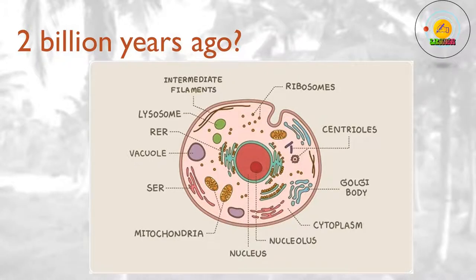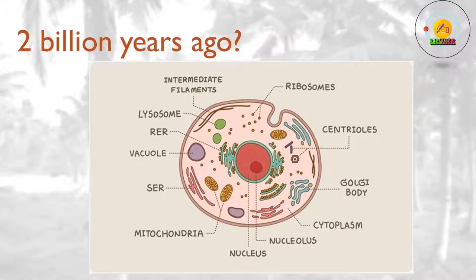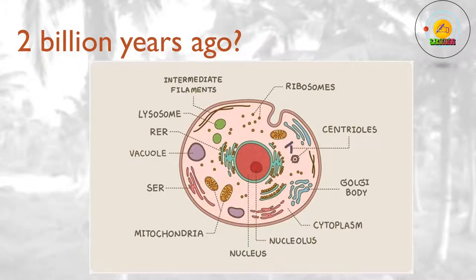The last common ancestor of all eukaryotic cells had mitochondria, and had also developed sexual reproduction. Later, eukaryotic cells engulfed photosynthetic bacteria and formed a symbiotic relationship with them. The engulfed bacteria evolved into chloroplasts, the organelles that give green plants their color and allow them to extract energy from sunlight. Different lineages of eukaryotic cells acquired chloroplasts on at least three separate occasions, and one of the resulting cell lines went on to evolve into all green algae and green plants.